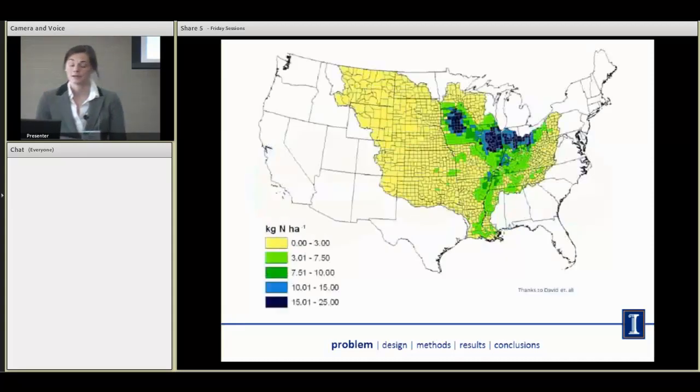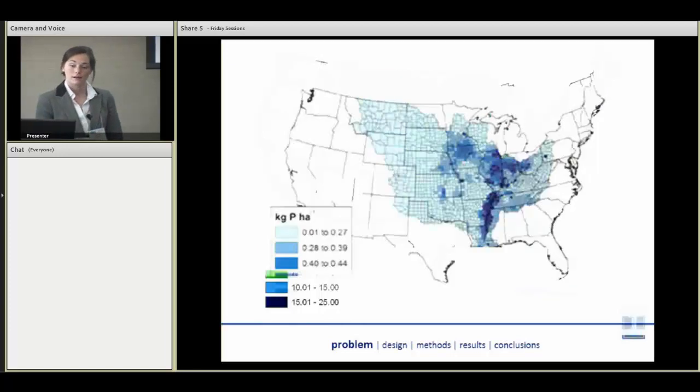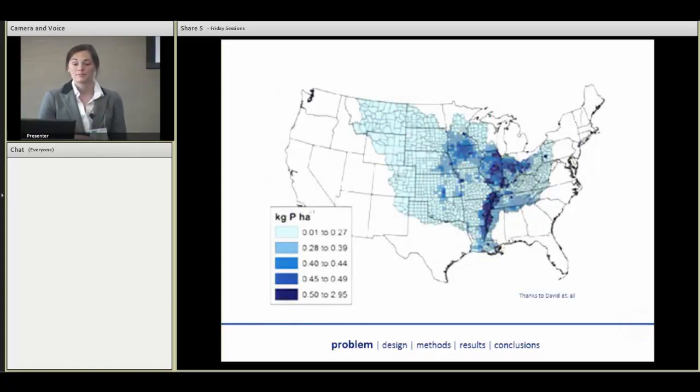This is just a map from Mark David, who we do a lot of work with, showing this extensive amount of nitrate loss in the Mississippi River Basin where we are at the U of I. This is a driver for eutrophic waters and the hypoxic zone in the Gulf. This is another map showing on a kilogram per hectare basis the amount of phosphorus moving through that system.